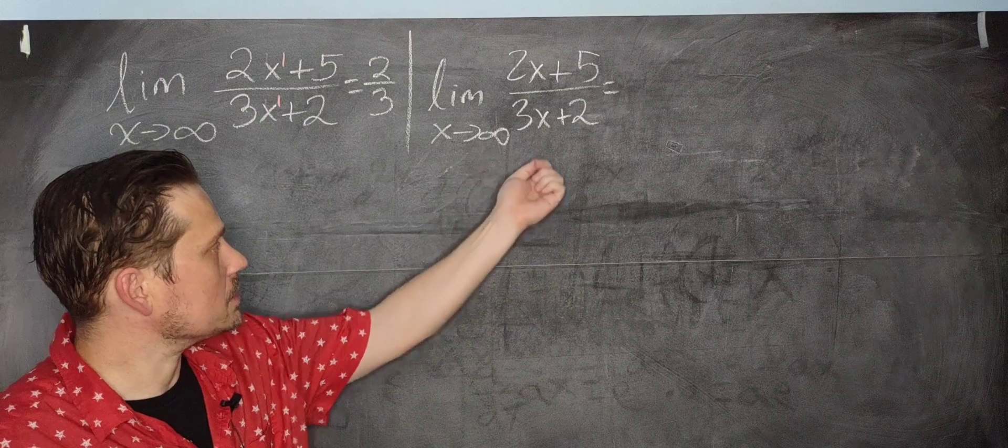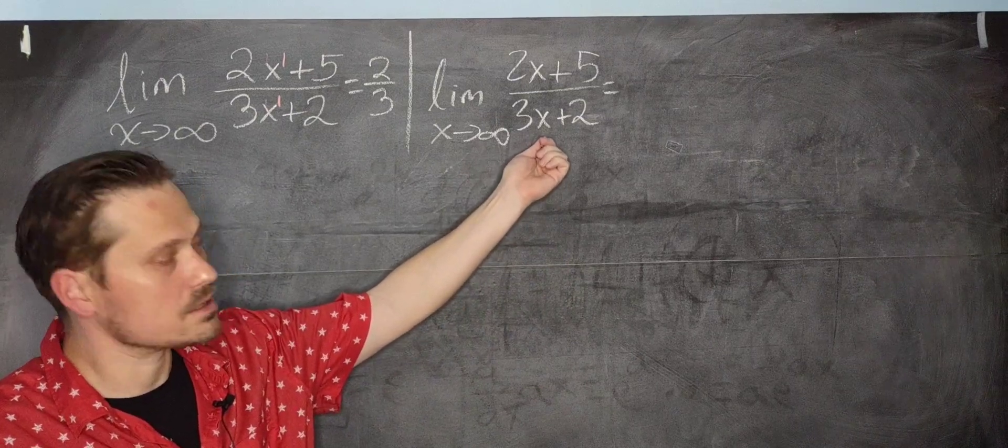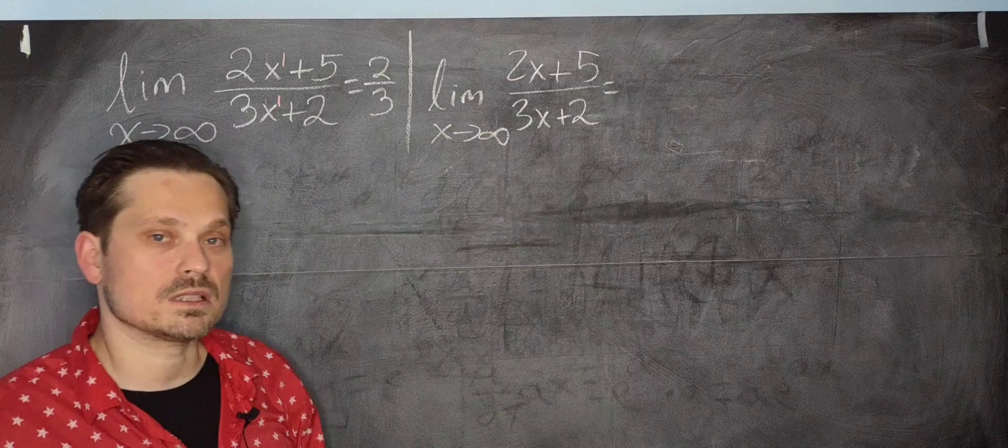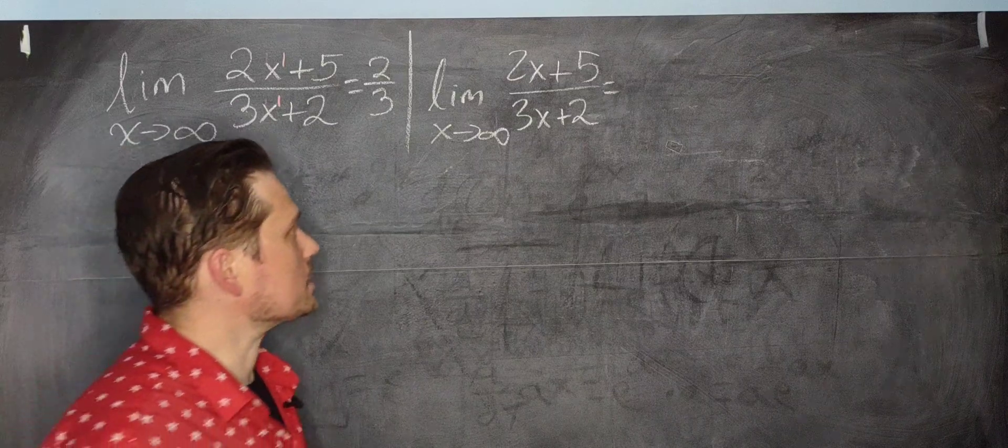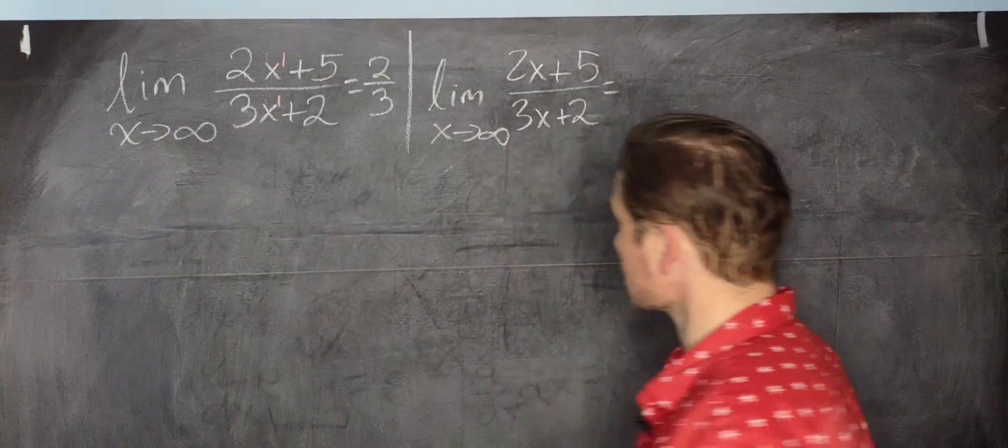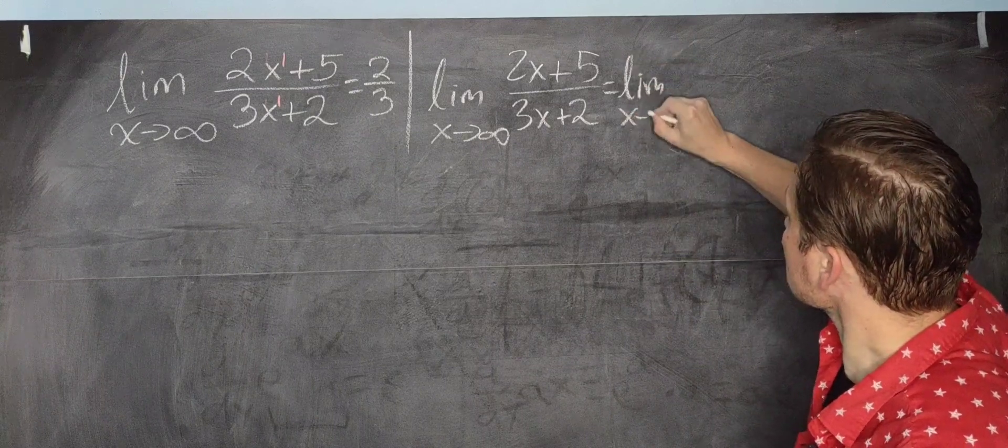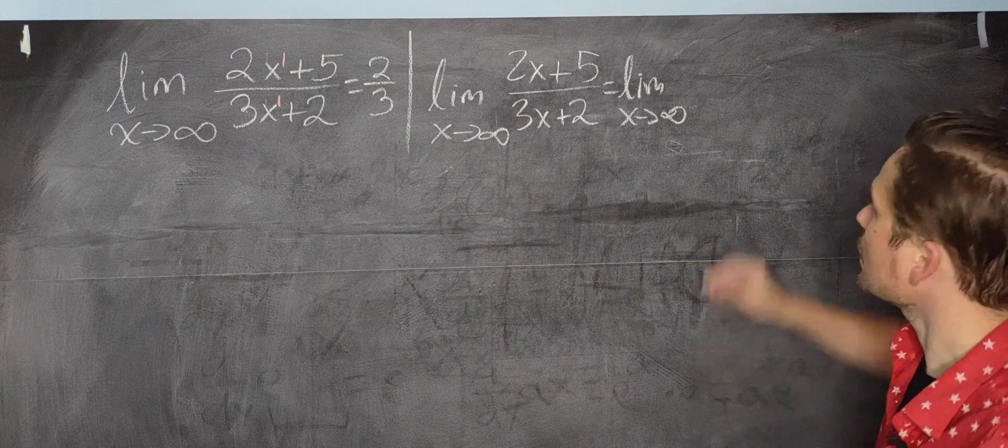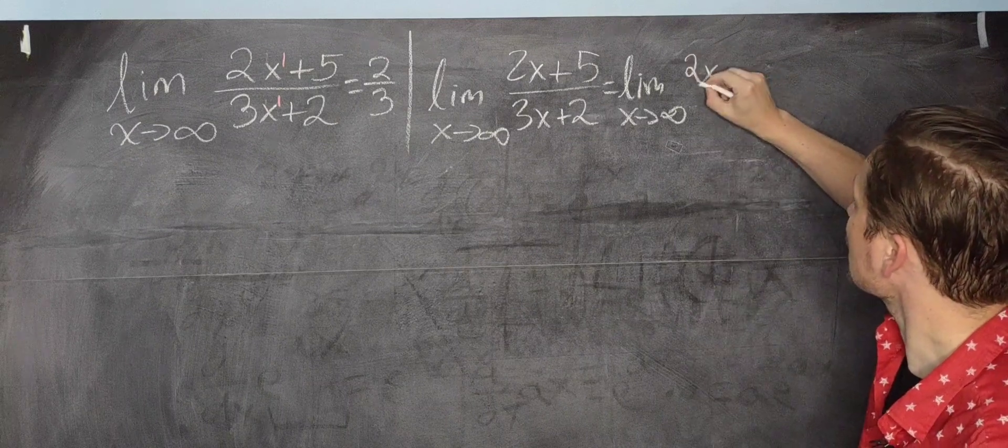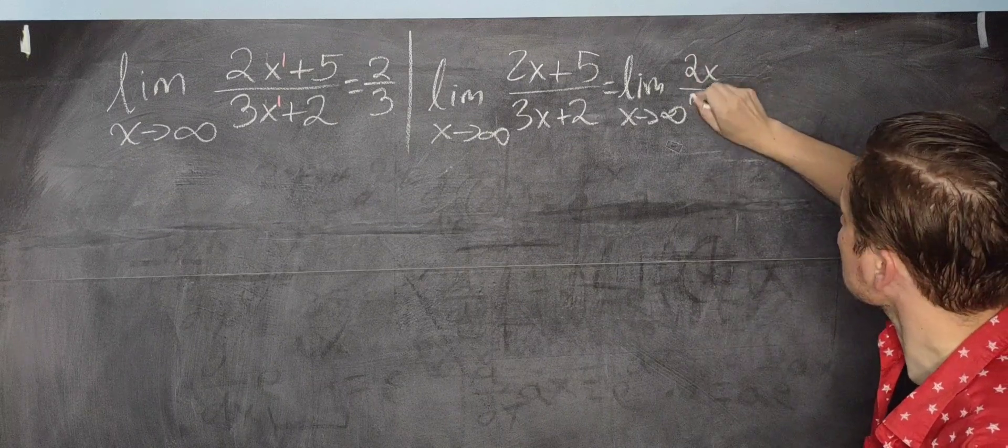When x is a large number, for example a million, then 3 times a million is 3 million. Adding 2 to it doesn't change it for the purposes of doing the limits. So what you can say in that case is you can just say it's the limit as x approaches positive infinity, this way, of just 2x over 3x, like this.